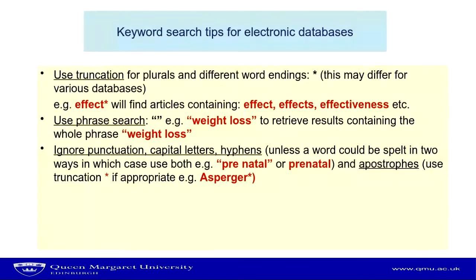We've talked about truncation — for plurals and different word endings, put a little asterisk in. In some databases this might be a different symbol, but each database will have an instruction manual and search tips you can use. For phrase search, if you want to retrieve results containing a whole phrase like 'weight loss,' put it in inverted commas. When doing your searching, ignore punctuation, capital letters, and hyphens — unless a word could be spelled in two different ways, in which case search for both. For instance, 'prenatal' with a hyphen and without.